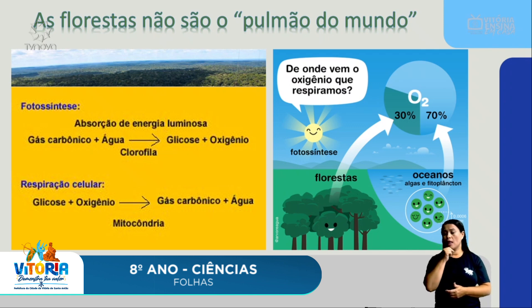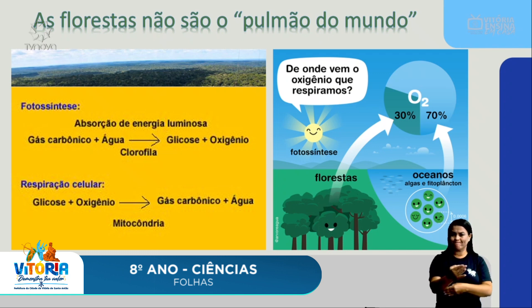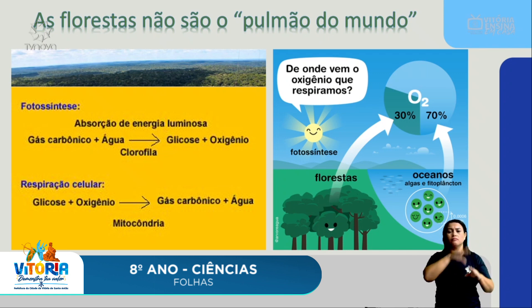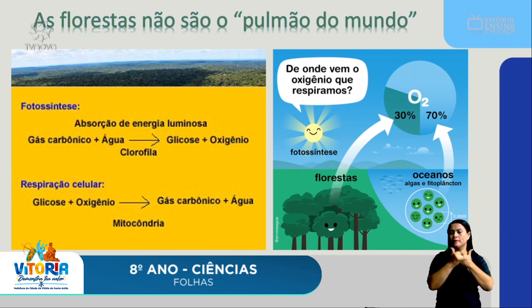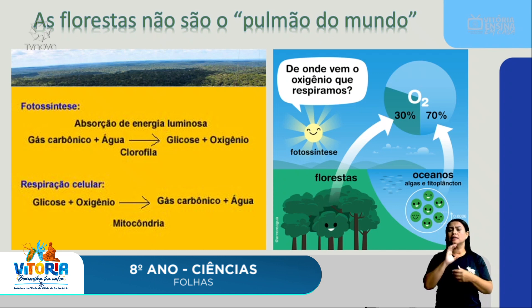Qual a importância das florestas para o nosso planeta? As florestas são muito importantes para prender o gás carbônico dentro dos seus troncos e caules, e também na regulação do clima. Com o desmatamento e as queimadas que ocorrem na floresta amazônica, regiões como o Pantanal e o Cerrado terão menos chuvas, haverá desabastecimento de água nos reservatórios hidrelétricos, podendo faltar luz nas nossas casas com a possibilidade de um apagão. Para compensar, ocorre a abertura das termoelétricas, que produzem energia elétrica gerando mais gás carbônico e aumentando o aquecimento global — é um problema gerando outro, tudo a partir do desmatamento.